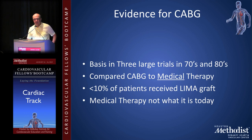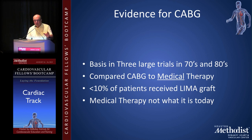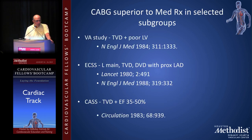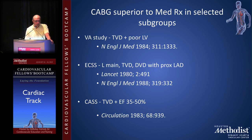The evidence for CABG goes back to the 70s and 80s, based on three large trials comparing CABG to medical therapy. Importantly, less than 10% of patients received an IMA graft, and medical therapy then was not what it is today — this was before statins. The VA study showed that patients with triple-vessel disease and poor left ventricular function did better with CABG, published in the New England Journal of Medicine in 1984. The European Coronary Surgery Study showed that patients with left main, triple-vessel, or double-vessel disease with a proximal LAD lesion did well, published in the Lancet in 1980.